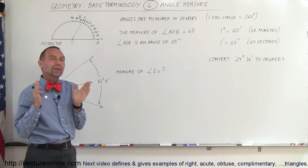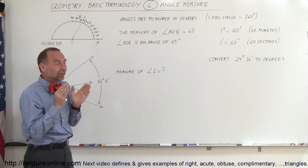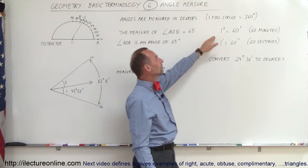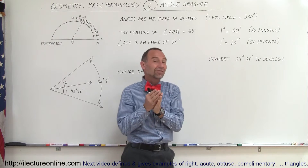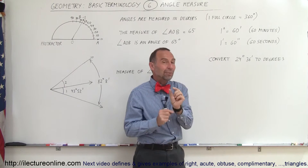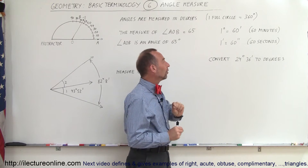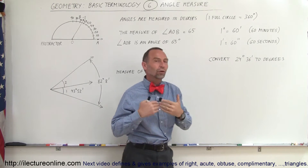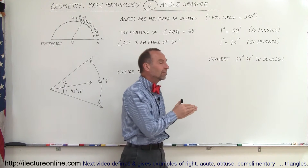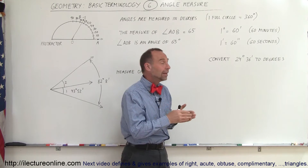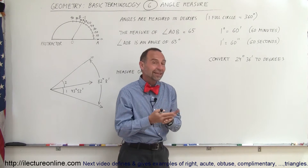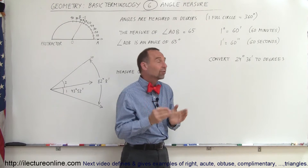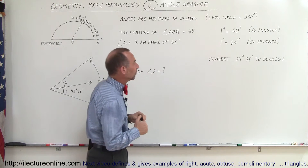Sometimes we want to measure very tiny angles — angles smaller than one degree — so we subdivide degrees into minutes. There are 60 minutes in one degree. Then, if we want even tinier angles, each minute is subdivided into 60 seconds. So there are 60 seconds in one minute and 60 minutes in one degree, which means there are 3600 seconds of arc in one degree measure.